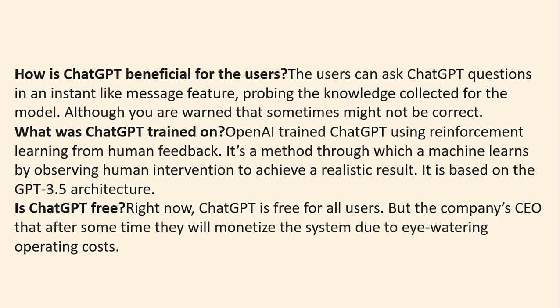The user can ask ChatGPT questions in an instant-message-like feature, though you are warned that some responses might not be correct. OpenAI trained ChatGPT using reinforcement learning from human feedback — a method through which a machine learns by observing human intervention to achieve realistic results. It is based on the GPT-3.5 architecture.